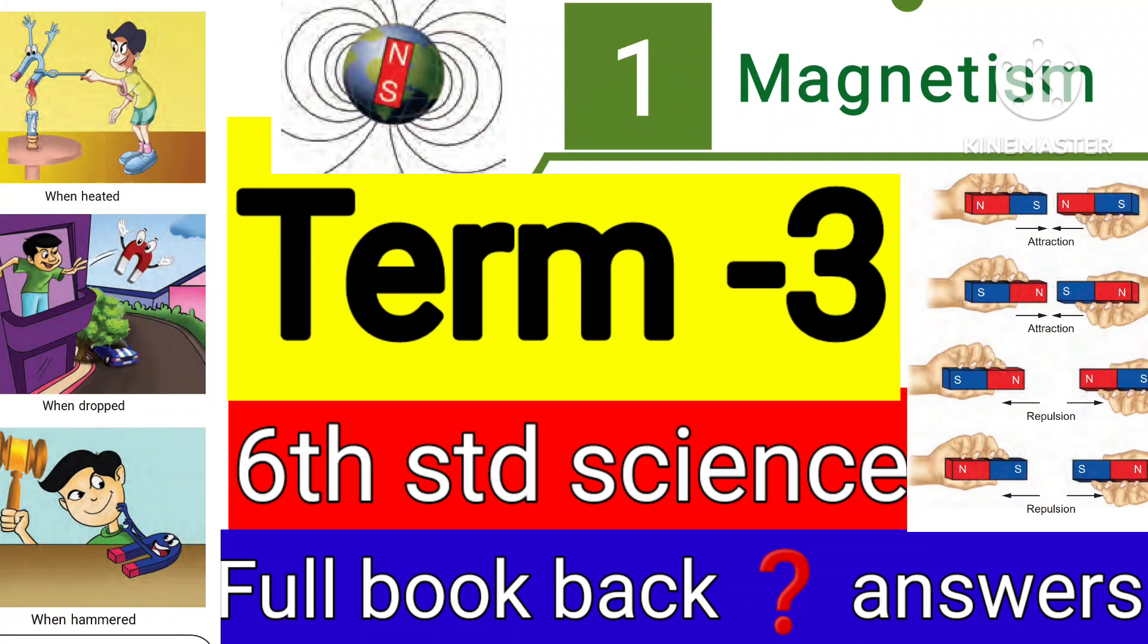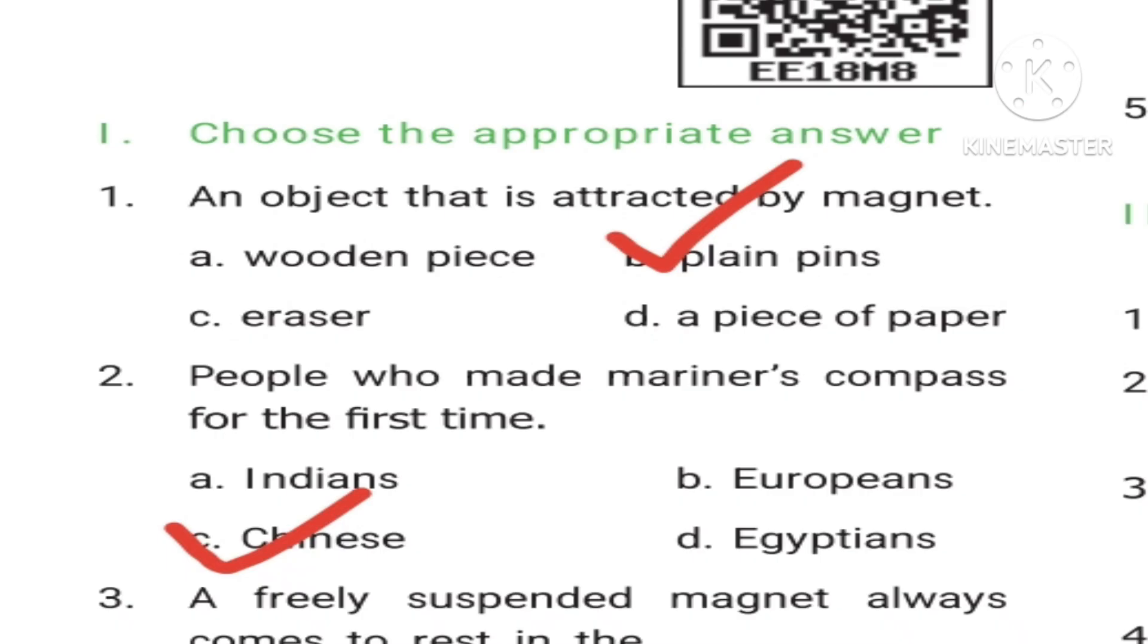Hi guys, 6th Standard Science, Term 3, Unit 1, Magnetism. Bookback Evaluation - let's start. First, Roman letter I, choose the appropriate questions.